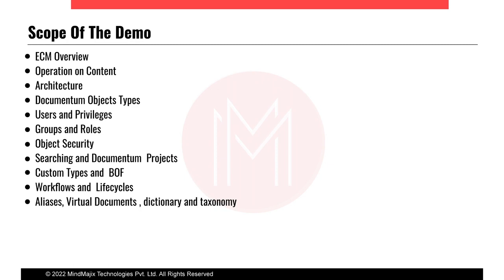Retention policy services — RPS — enables policies to manage the lifecycle of objects stored in the repository. As discussed in the architecture, the retention policy defines a period after which the document is automatically removed from the system. There is a job which runs through the lifecycle to check the life of that document, and if the period is over, it automatically removes it from the system.